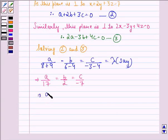This implies a = 17λ, b = 2λ, and c = -7λ.